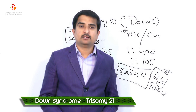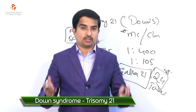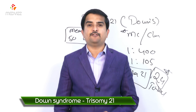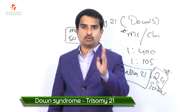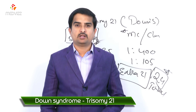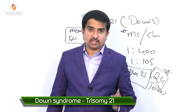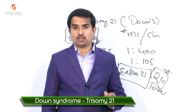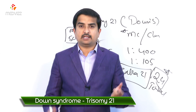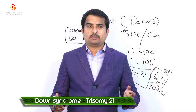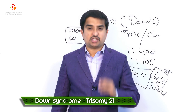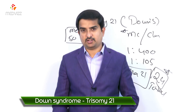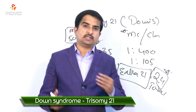Trisomy 21 patients have an increased risk of multiple complications. Congenital cardiac defects are common, including atrial septal defect and endocardial cushion defect. Gastrointestinal disorders are also common, such as duodenal atresia, stenosis, Hirschsprung's disease, and celiac disease.